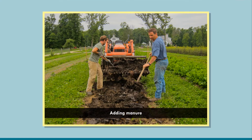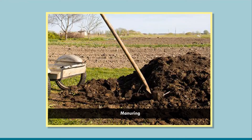Adding Manure. A young plant needs adequate amounts of nutrients for its proper growth. These are provided in the form of manure and fertilizers. Manure and fertilizers are substances which are added to the soil to provide nutrients for healthy growth of plants. Due to continuous growing of crops, known as the crop cycle, the soil becomes deficient in nutrients. The process of replenishing the soil with nutrients is known as manuring.